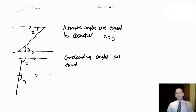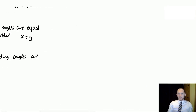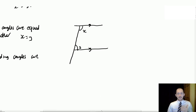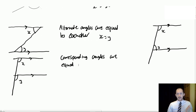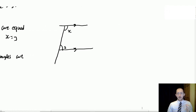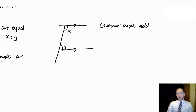Using these two facts, you can work out the next angle rule: co-interior angles, also called C angles. These look like an F angle but we look at the two angles on the same side. Co-interior angles add to 180 degrees, so x plus y equals 180 degrees.